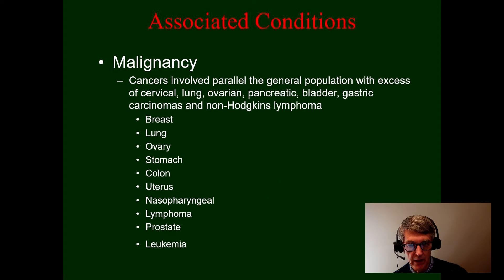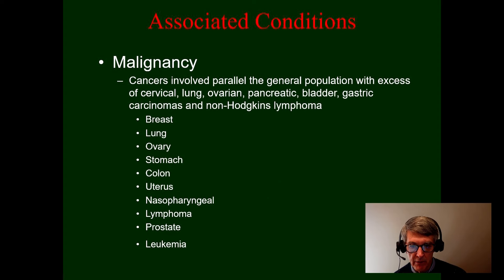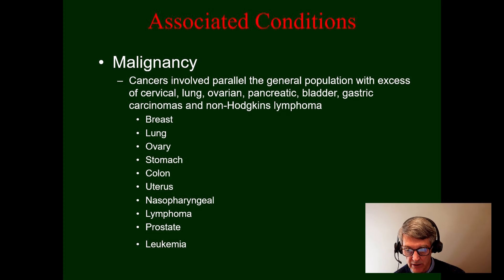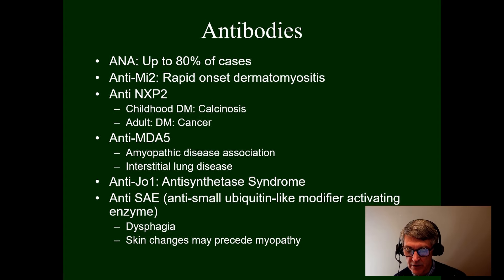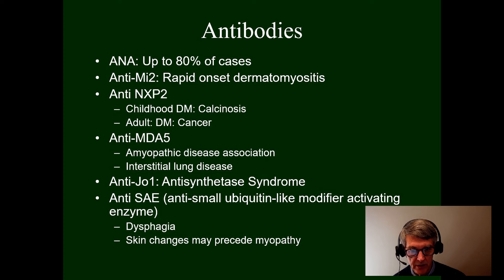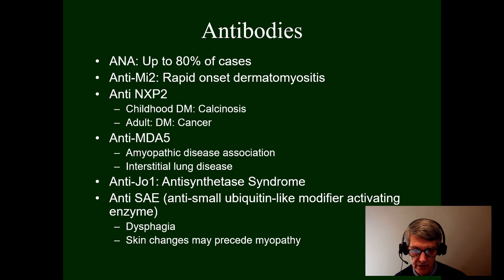The types of cancers mirror the population, with an excess of cervical, lung, ovarian, pancreatic, bladder, and gastric cancers, and non-Hodgkin's lymphoma. Antibodies associated with dermatomyositis include the anti-nuclear antibody in up to 80% of patients. Anti-MI2 seems associated with rapid onset dermatomyositis. NXP2 is associated with increased adult cancer risk and in children with increased calcinosis risk.